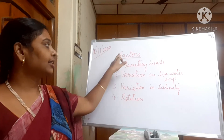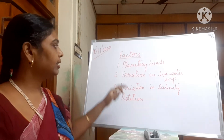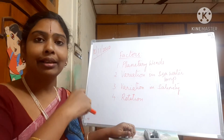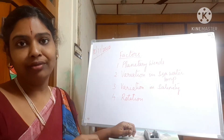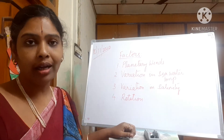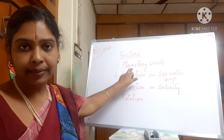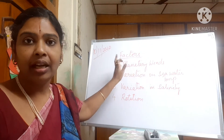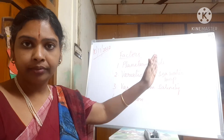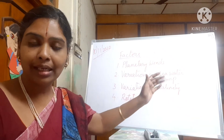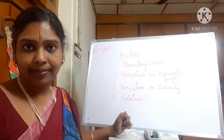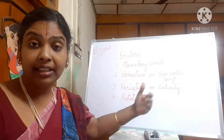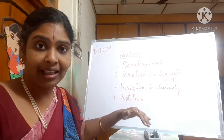Now we are going to see the factors which influence ocean currents. The first factor is planetary winds — winds which blow in a particular direction year-round, also known as permanent winds. These winds, blowing in one direction, influence the ocean currents to keep flowing in the same direction. For example, the westerlies influence the ocean currents of the Pacific Ocean and the Atlantic Ocean.